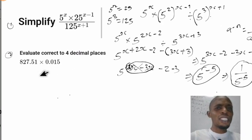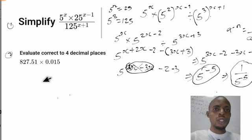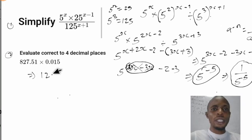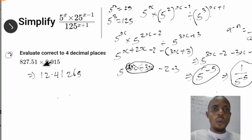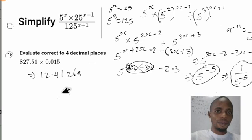The first thing is to apply your calculator. Enter 827.51 multiplied by 0.015. When you do the multiplication, you get the answer 12.41265. The question asks you to leave your answer correct to four decimal places.